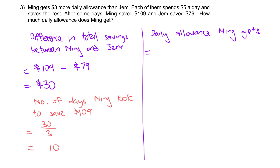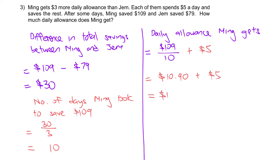Given that they took 10 days to spend and save, we can figure out the daily allowance that Ming gets. The amount saved per day is $109 divided by 10, which gives $10.90 per day. Adding the $5 spent per day gives $10.90 plus $5, which equals $15.90. This is Ming's daily allowance.